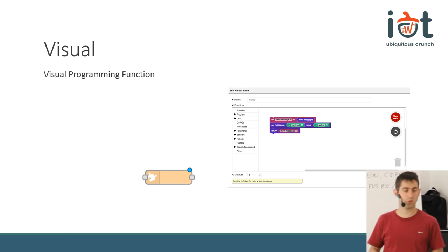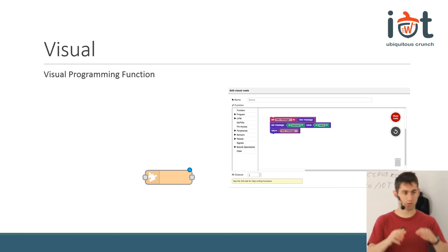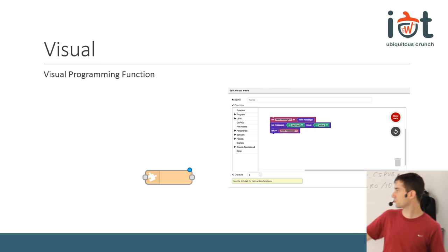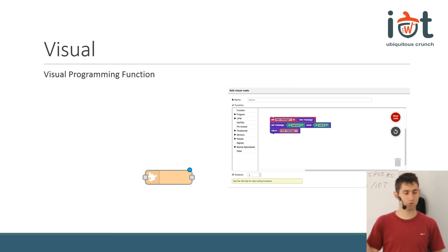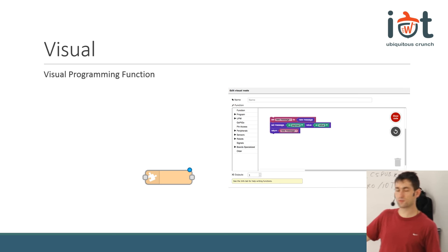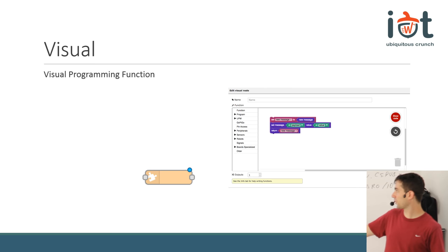I suggest using the visual node for controlling peripherals — for LCDs, motors, or sensors that require more specific APIs. Instead of searching through documentation for the right functions and parameters, it's way easier to drag and drop blocks for those sensors. The difference for visual programming inside the node is that you have a special function category with blocks specific to this node: the received message block, a new message block, and a return block — which are not available in standard visual programming.